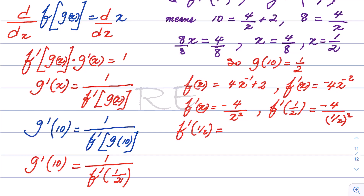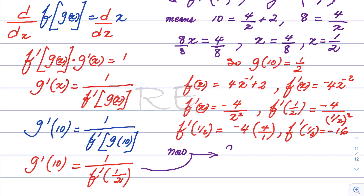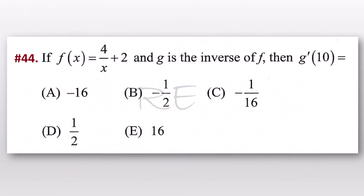f prime of 1 half equals negative 4 times the reciprocal of 1 fourth, which is 4 over 1. Therefore, f prime of 1 half equals negative 16. Substituting back, g prime of 10 is equal to 1 divided by negative 16. The answer is C.